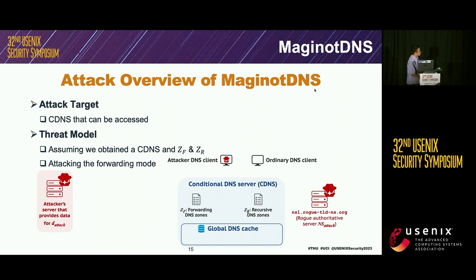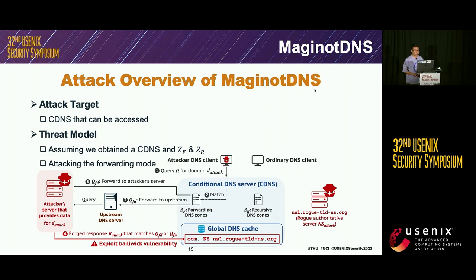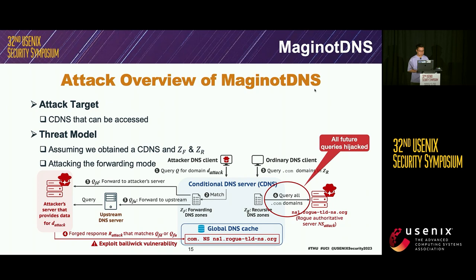Here is our attack model. Before the attack, we assume CDNS has been identified and we have obtained its query zones. Our key idea is to attack in the forwarding mode. The attacker sends a query for their own domain, and depending on the query zone, the CDNS will forward the query to either the attacker's server or to an upstream server. The attacker then injects forged responses into the global cache by exploiting the bailiwick vulnerabilities, and all future queries for the fake TLD will be hijacked.